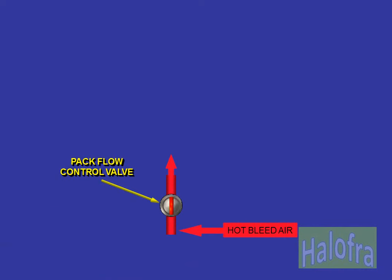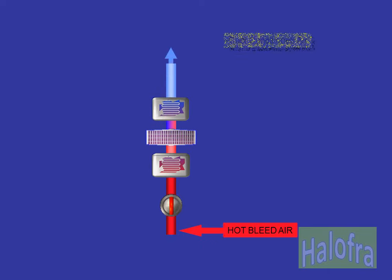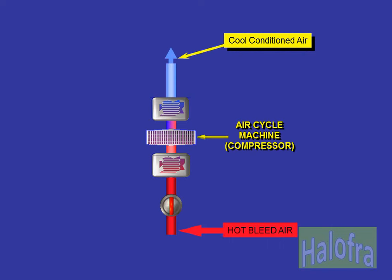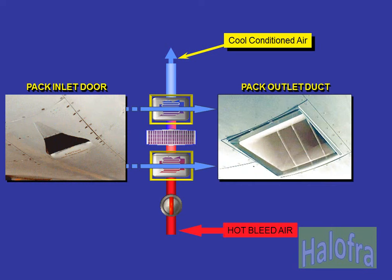Hot bleed air enters the pack via a pack flow control valve. The purpose of this valve is to adjust the flow rate through the pack and to achieve the shutoff function. The air then passes through several stages within the pack that progressively cool the air to provide a conditioned air output. Two of the stages are heat exchangers that use a flow of ram air to cool the hot bleed air. This flow of air enters via a pack inlet door and exits via an outlet duct.